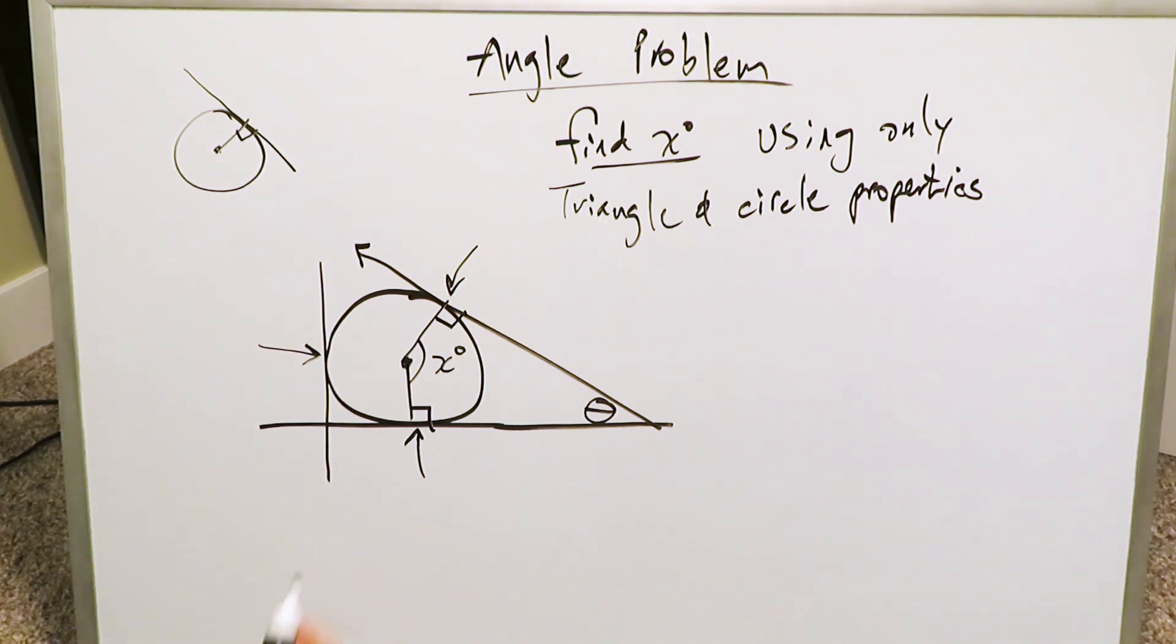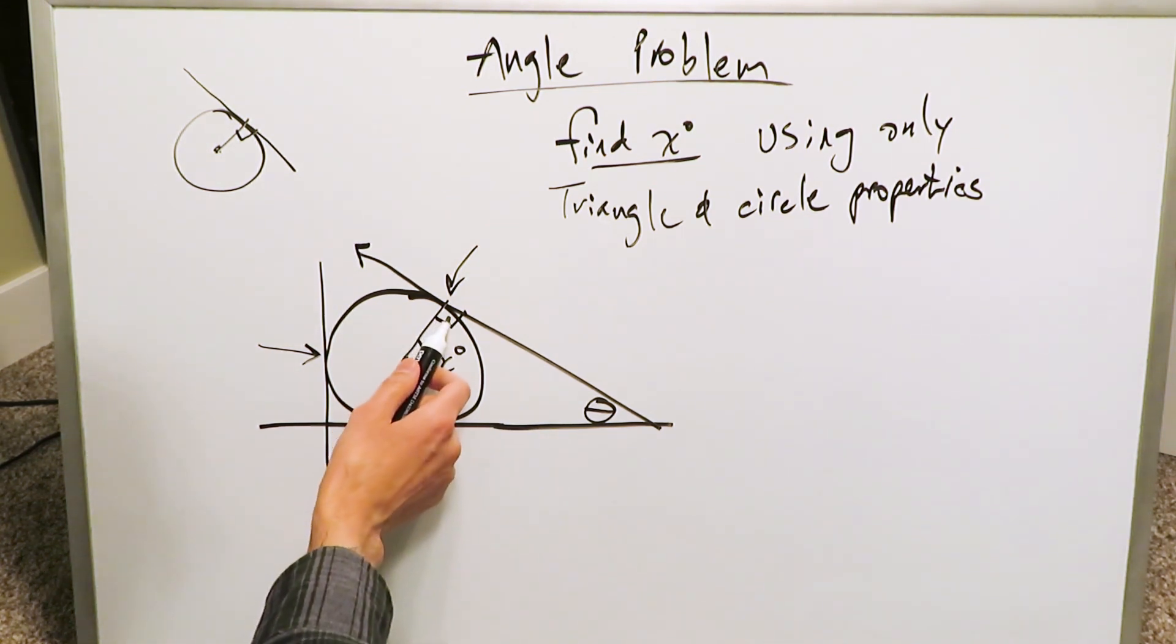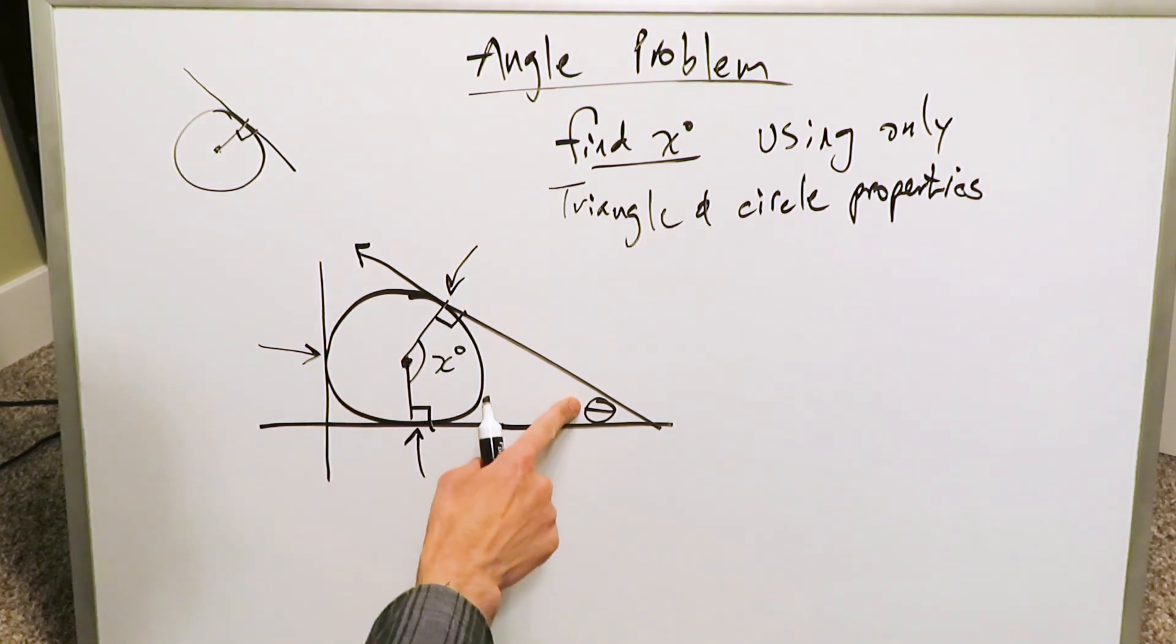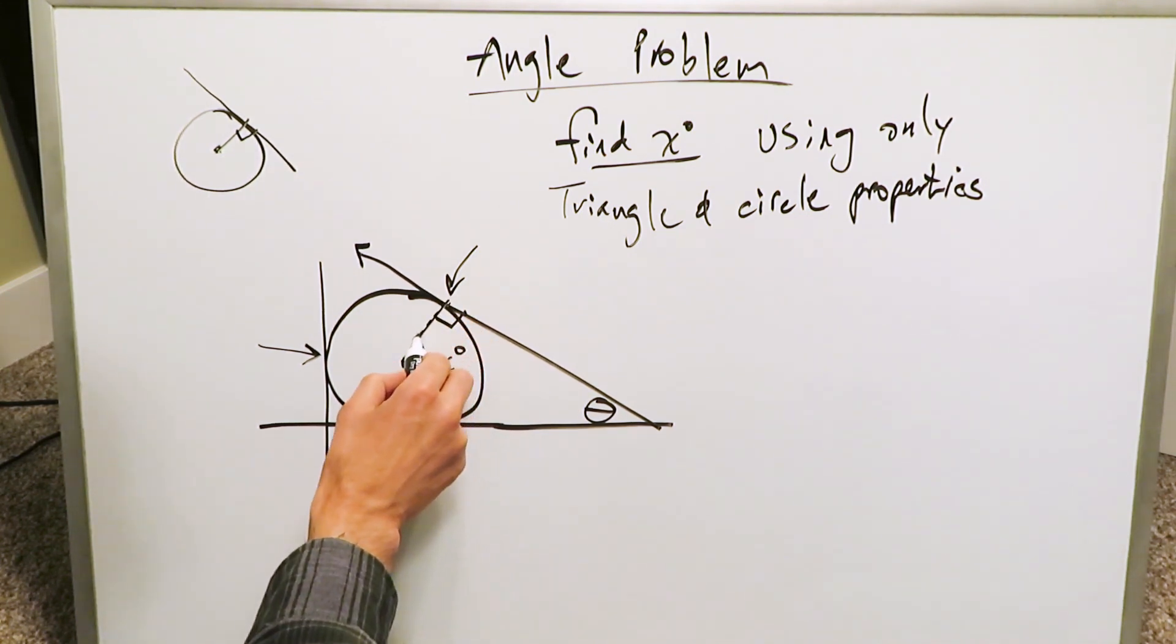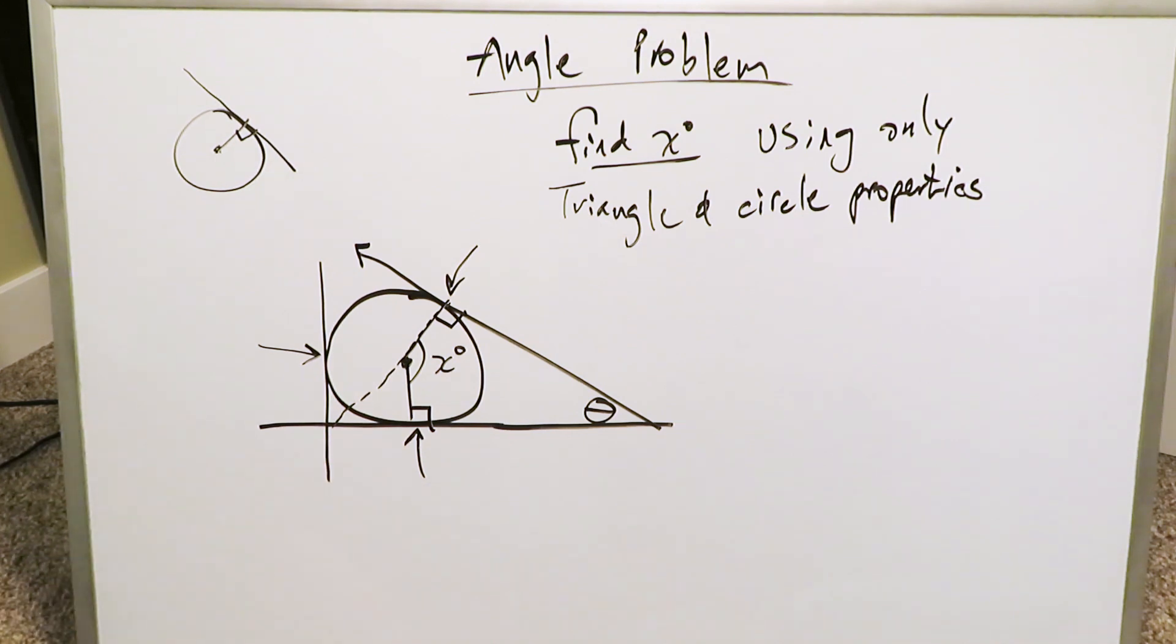The most logical step then to proceed, given that we have 90 degrees, 90 degrees, we have a theta angle and we have to determine x, is to extend this right over here, extend it across. When you extend it across and you look at this entire large triangle, you pluck it out. I'm just drawing out here. I have a 90 which corresponds to, I have a theta over here. Then I have this specific angle which corresponds right over here. What can this angle be?